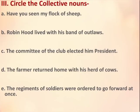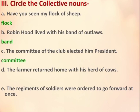Question number 3: Circle the collective nouns. Collective nouns are a name given to a collection or a group. A part: Have you seen a flock of sheep? So flock will be the collective noun. B: Robin Hood lived with his band of outlaws — band is a group of outlaws. C: The committee of the club elected him president — committee is a group of members of the club. D: The farmer returned home with his herd of cows — a group of cows is called herd, so it's a collective noun.